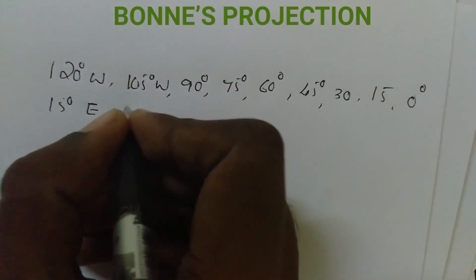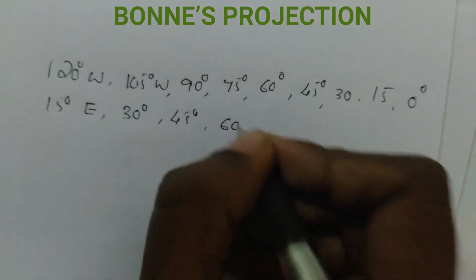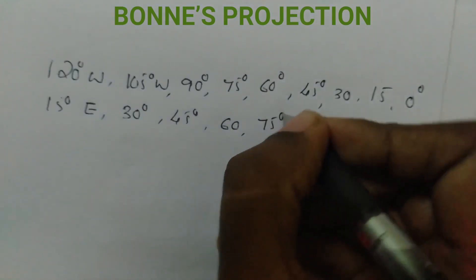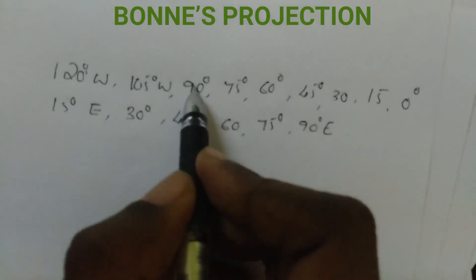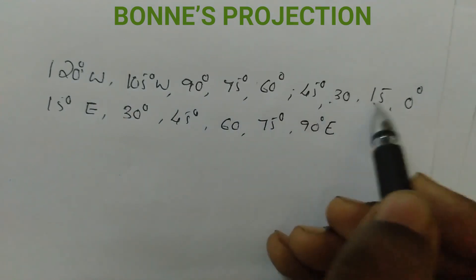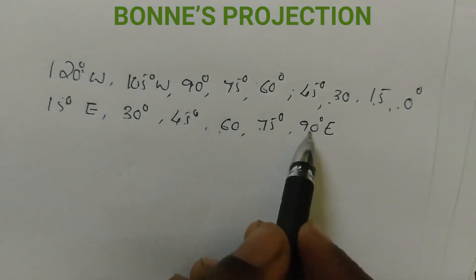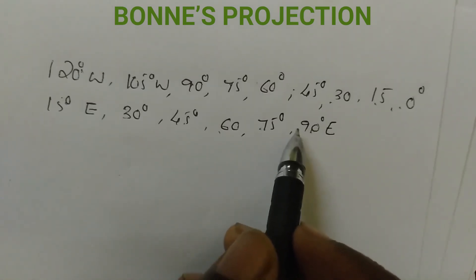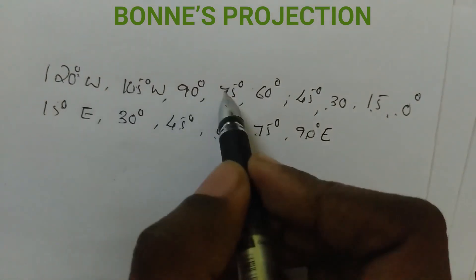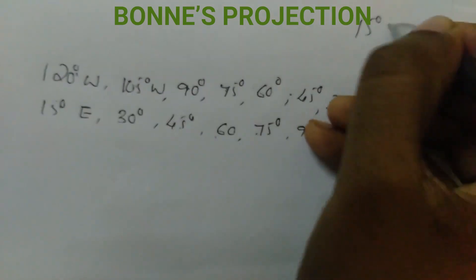Then 30 degrees, 45 degrees, 60 degrees, 75 degrees, 90 degrees East. Counting the divisions: 1, 2, 3, 4, 5, 6, 7, 8, 9, 10, 11, 12, 13, 14, 15. Then 15 degrees West.